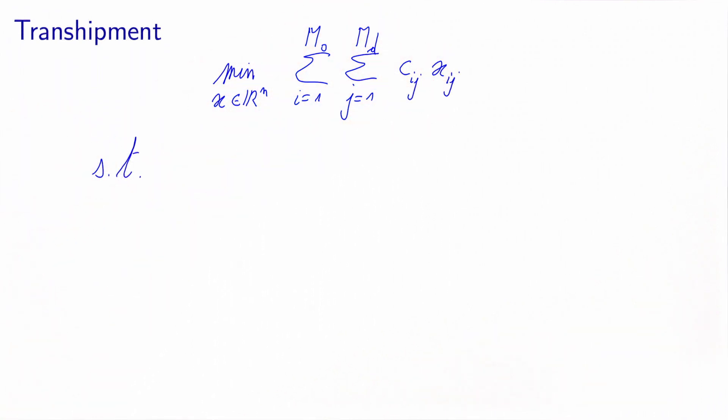For the suppliers, we have that the sum of the outgoing arc, meaning the sum over all customers of the flow, must be equal to Si, which is the total quantity of energy which is produced by the supplier.